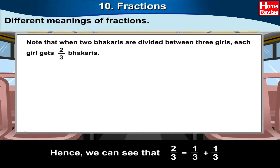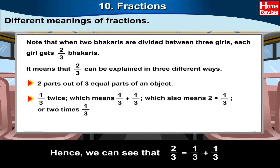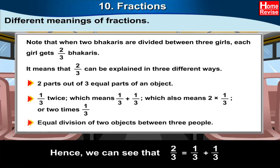When two bhakris are divided between three girls, each gets two thirds. Two thirds can be explained in three different ways: two parts out of three equal parts of an object; one third twice, which means one upon three plus one upon three; which also means two times one upon three; and equal division of two objects between three people.